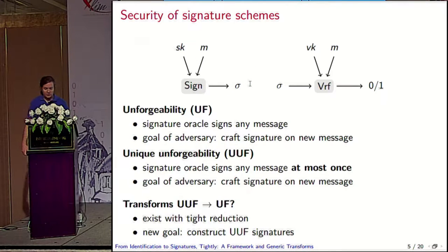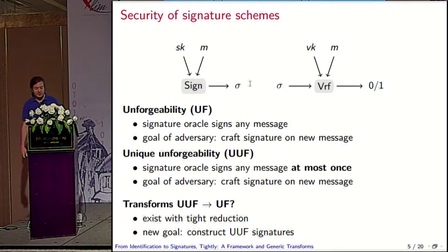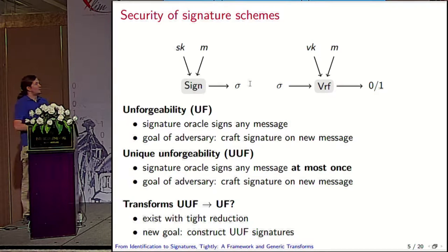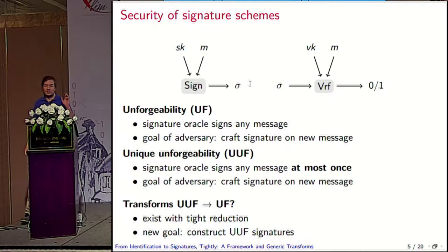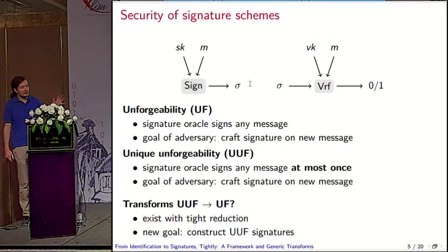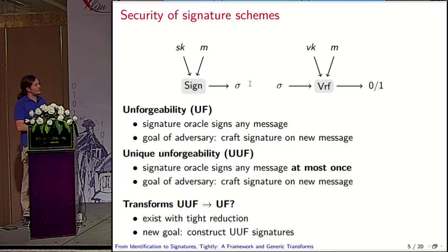The first step is to look more into the security of signature schemes — so far I gave you the syntax. The most common security notion is existential unforgeability under chosen message attack, which we denote just with UF. There the adversary needs to forge on any message, and it has a signature oracle that signs any message it provides. Then there's a second notion, a more technical one that we need in this paper.